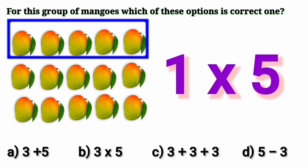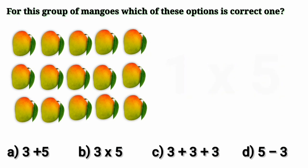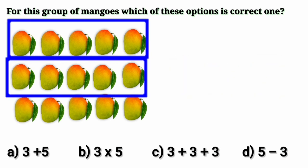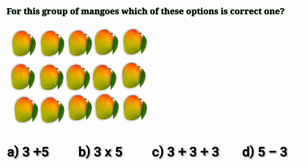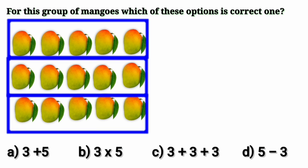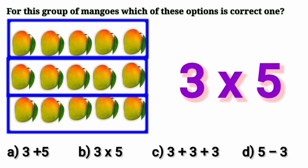Now in two groups of five mangoes we have two multiplied by five, two fives are ten. And now in three groups of five mangoes we have three multiplied by five. Yes, three multiplied by five. Option b is the correct option here.